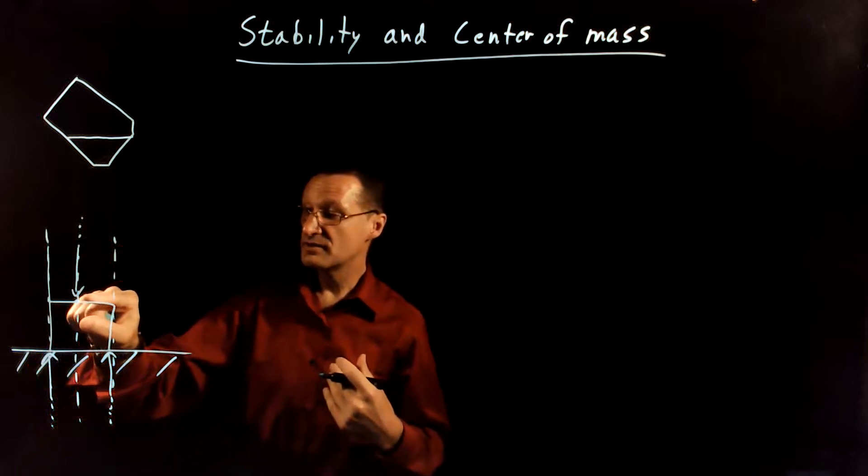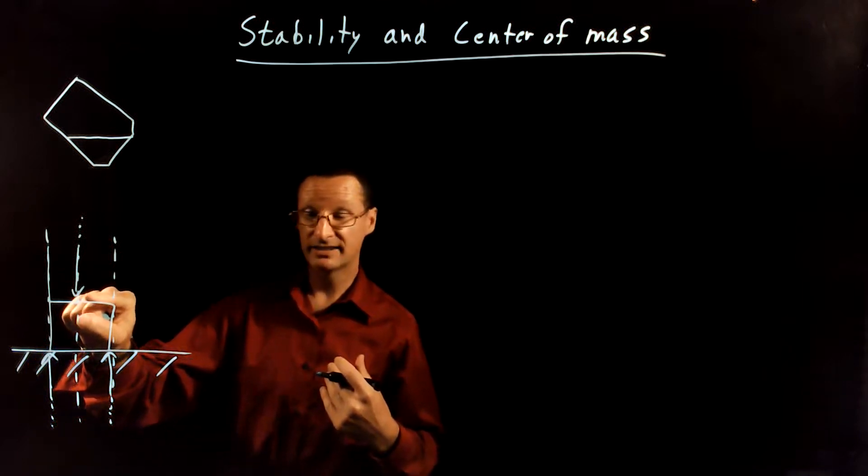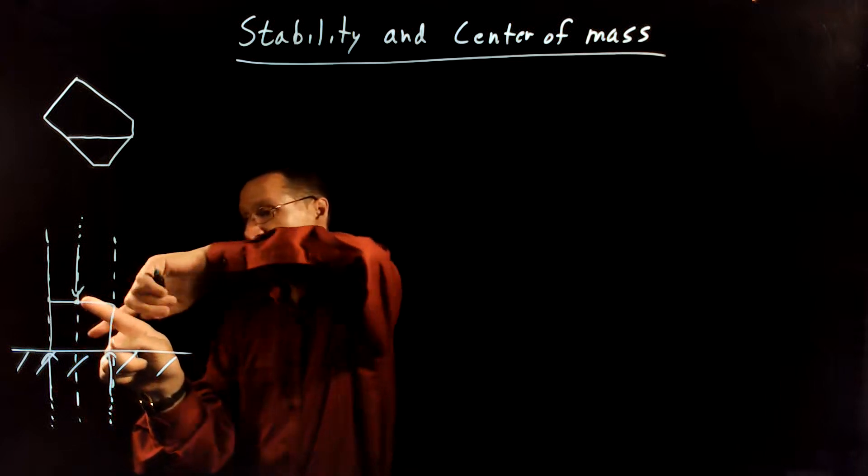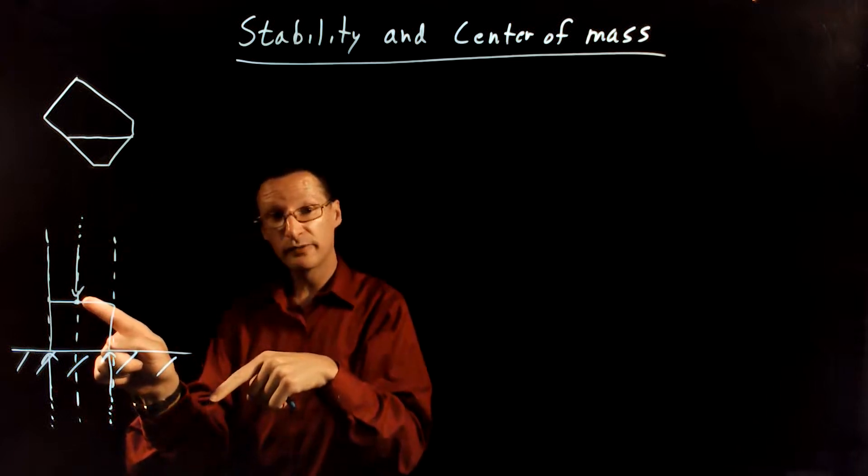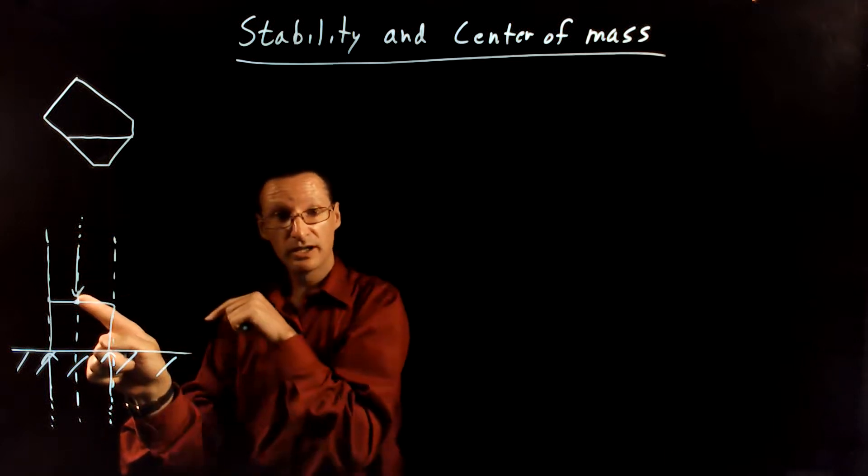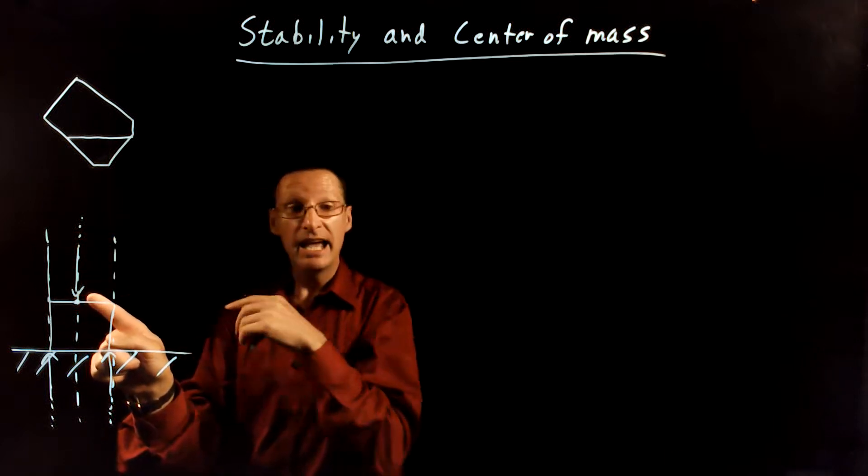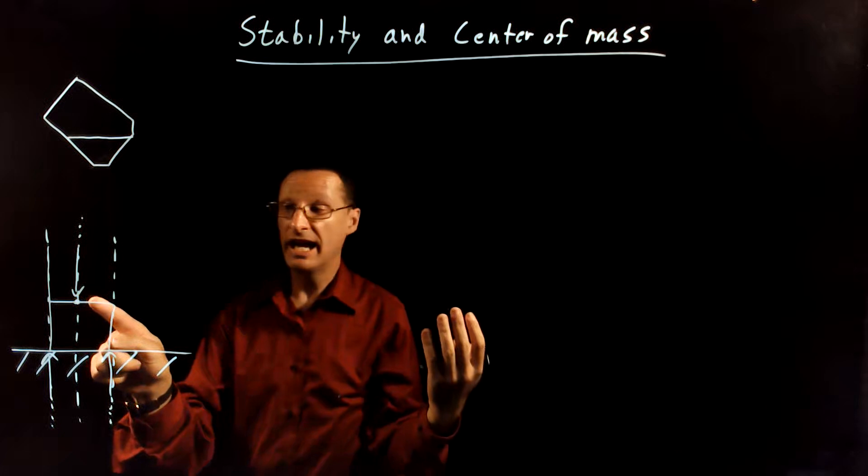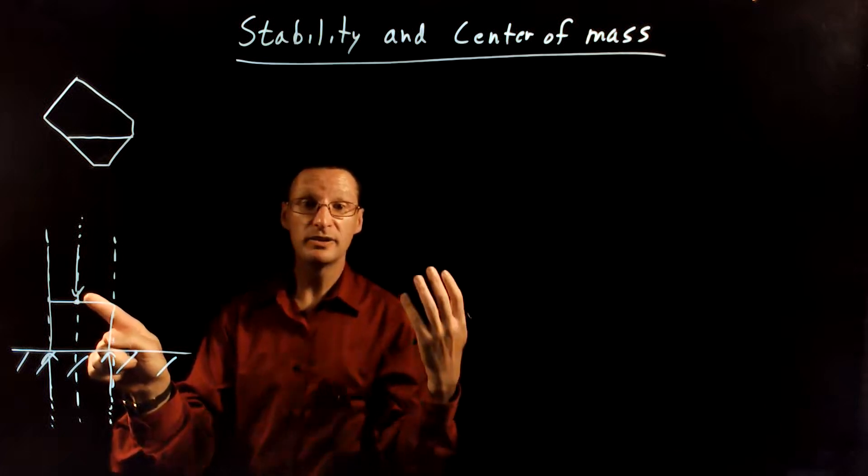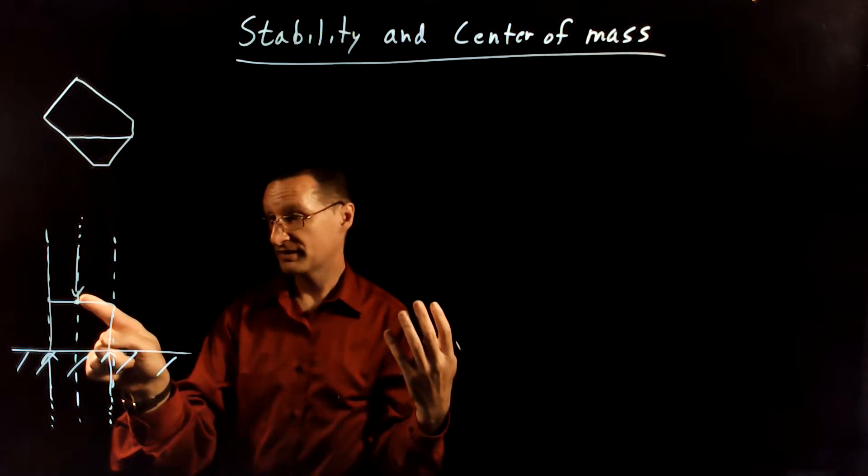If instead I choose the center of mass as my axis point, then I'm going to get a clockwise torque from the back leg, a counterclockwise torque from the force on the front leg, and those two will sum to zero, and I will again get zero net torque about this center of mass.